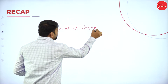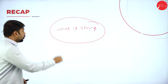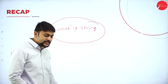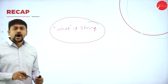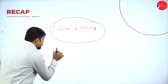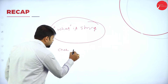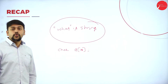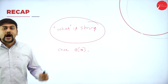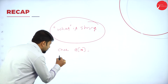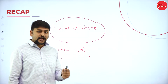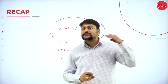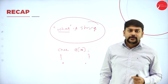In the last session, we discussed what strings are — a group of characters enclosed between quotes. We also discussed how to declare a string: write the data type as char, then the array name, and mention the size. There are two methods to initialize values: first, using curly braces, and second, enclosing the string with double quotes.